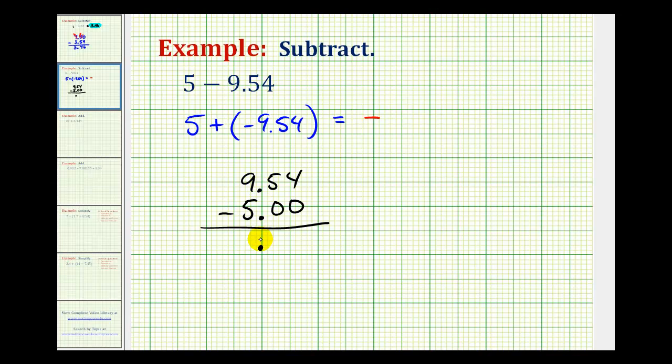Again, we're subtracting the absolute values because, as an addition problem, we're adding numbers with different signs. So we have 4 minus 0, that's 4, 5 minus 0 is 5, and 9 minus 5 is 4.